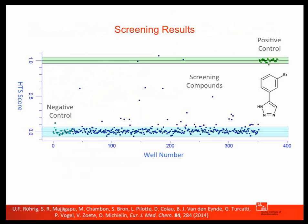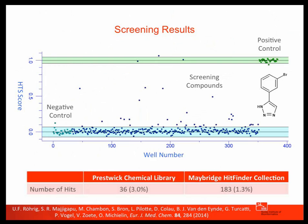Here is an example from one of the 384-well plates we screened during this campaign. Everything looks really nice — we have our negative control on the left-hand side, the first 32 wells, the library compounds in the middle, and the positive control on the right-hand side, which is a molecule we developed previously. We have a very nice signal-to-noise ratio and good hits. The y-axis shows the high-throughput screening score going from zero for the average negative control to one for the average positive control. We got a nice hit rate both for the Prestwick Chemical Library and for the Maybridge HitFinder collection.